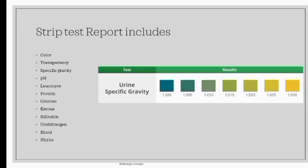Specific gravity range is 1.000 to 1.030. Low specific gravity occurs due to diabetes insipidus and kidney disease, and high specific gravity occurs due to diabetes mellitus or dehydration.